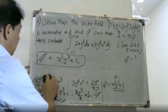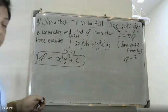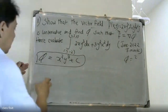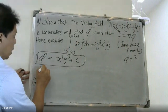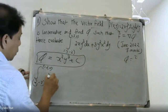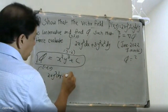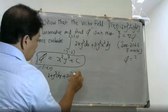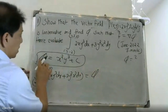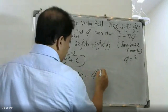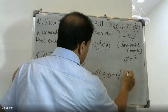Now to evaluate the line integral from (-2, 0) to (2, -2) of 2xy³ dx plus 3y²x² dy, we use the potential function. The answer is φ(2, -2) minus φ(-2, 0).